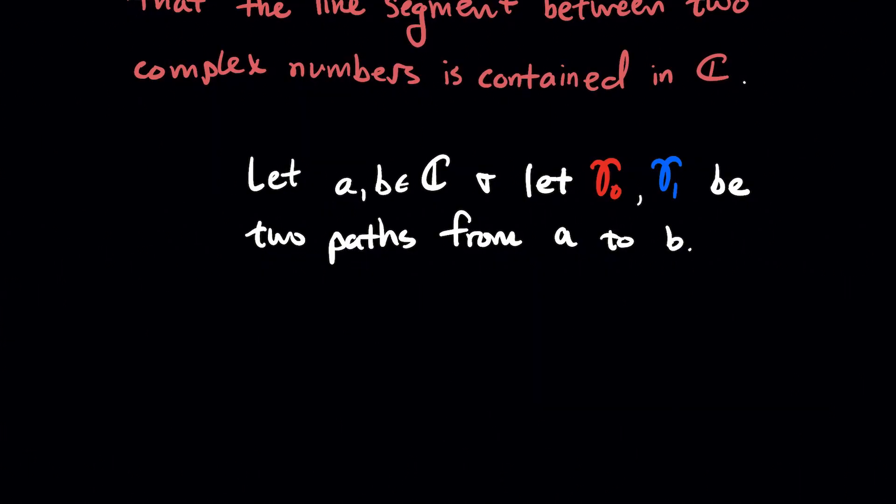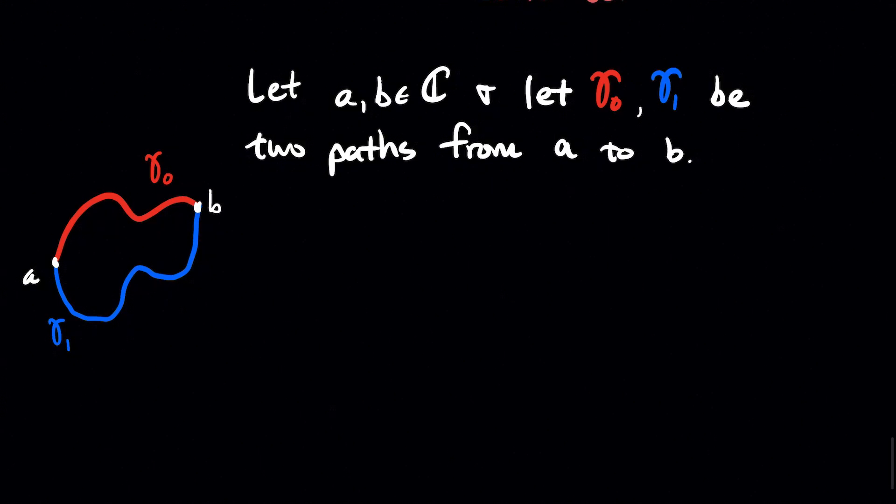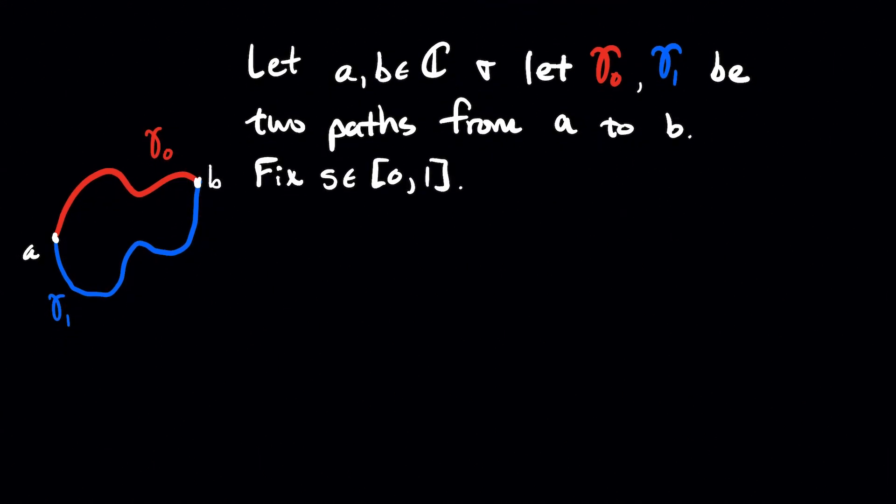So let's let a and b be any two complex numbers. And let's say we've got two paths gamma naught and gamma one between a and b. So something like this picture over here. We're going to fix an s between zero and one. So hold s constant right now in your head. Think s assumed a specific value.